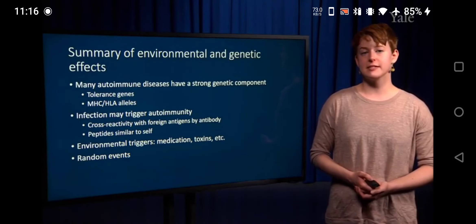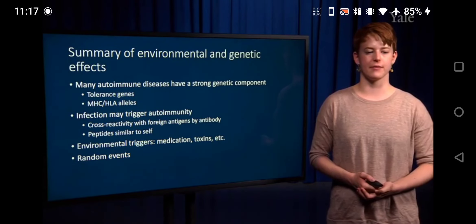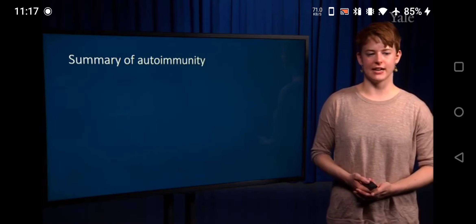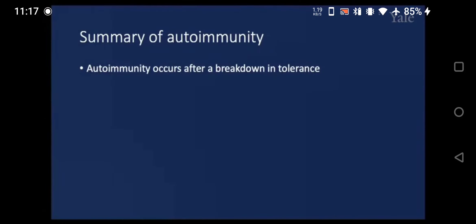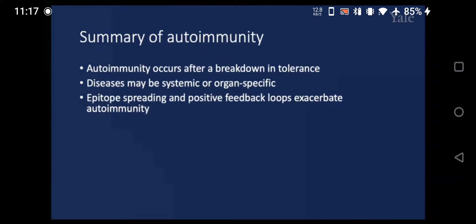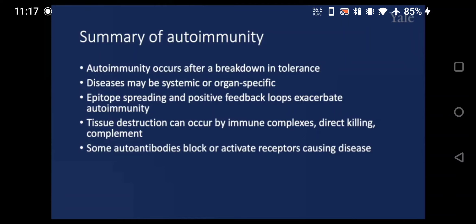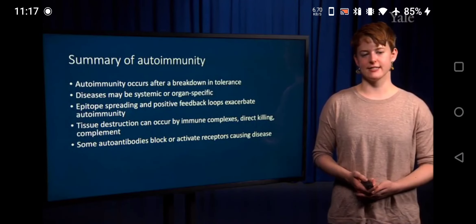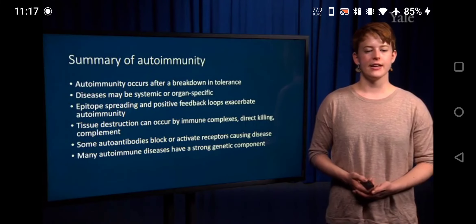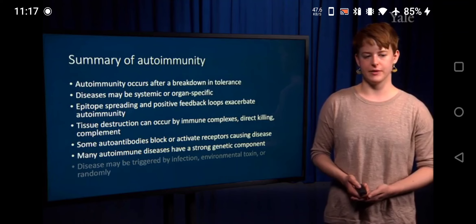To summarize overall: autoimmunity occurs after a breakdown in tolerance, and diseases may be systemic or organ-specific depending upon the location of the self-antigen. Epitope spreading and positive feedback of an inflammatory response can also lead to or exacerbate autoimmunity. Tissue destruction can occur by immune complexes, direct killing, or a complement response. Some autoantibodies can block the function of receptors, causing symptoms of disease such as we saw in myasthenia gravis. Many autoimmune diseases also have a strong genetic component, and diseases may be triggered by infection, environmental toxins, or through an accumulation of random events.